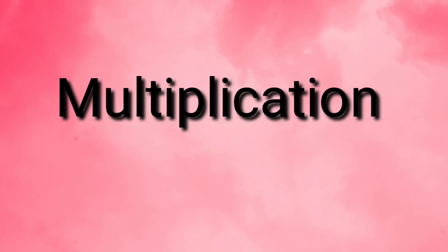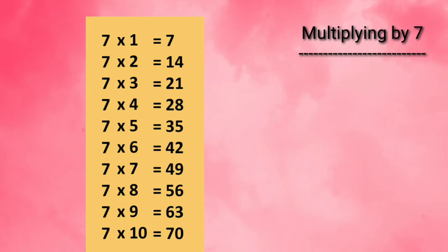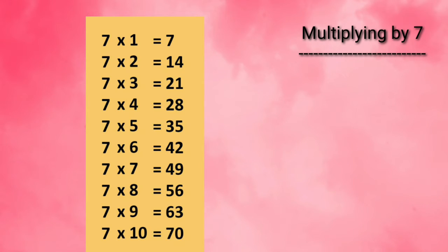Multiplication. Multiplying by 7. 7 times 1 is 7. 7 times 2 is 14.